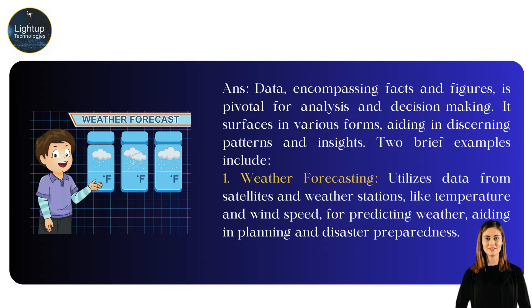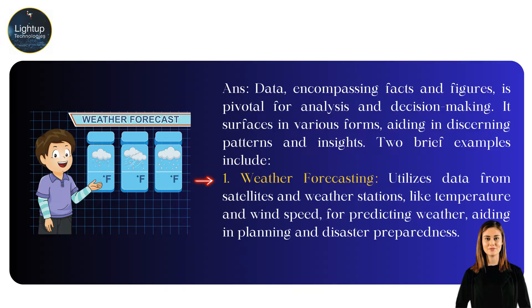Two brief examples include: weather forecasting, which utilizes data from satellites and weather stations — like temperature and wind speed — for predicting weather, aiding in planning and disaster preparedness.